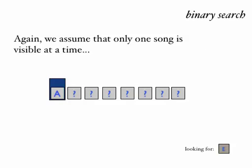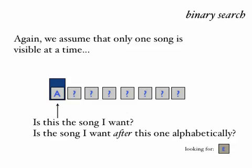How do we find it? Well, if we've got our screen that only shows a single song at a time, our view really looks something like this — we don't actually know what most of the songs are in the list, we only know the name of the current song. In this case it's the first one in the list, A. The question is: is this the song we want? It's not — we're looking for E. Since we know this list is sorted in alphabetical order, is the song E going to appear after song A in the list? If it is, then we need to look somewhere to the right of the current location.